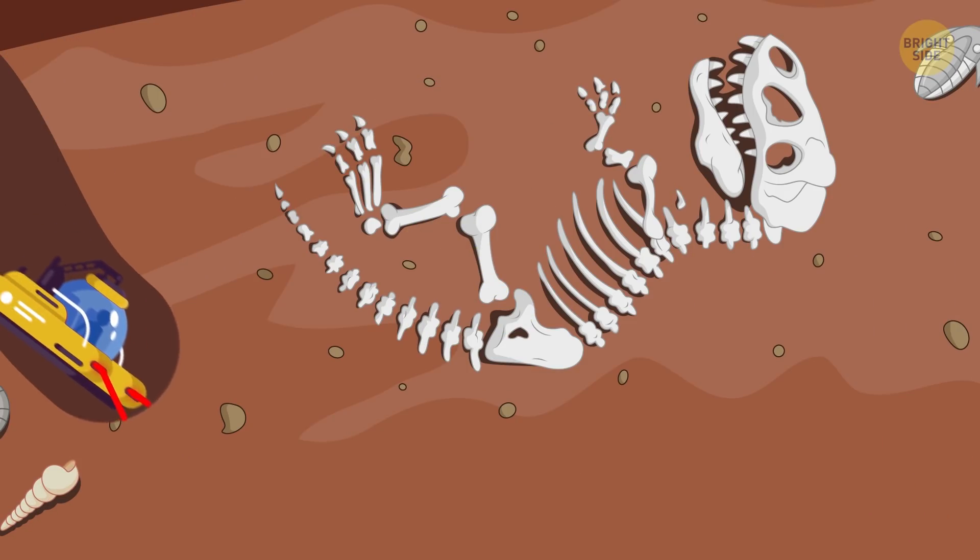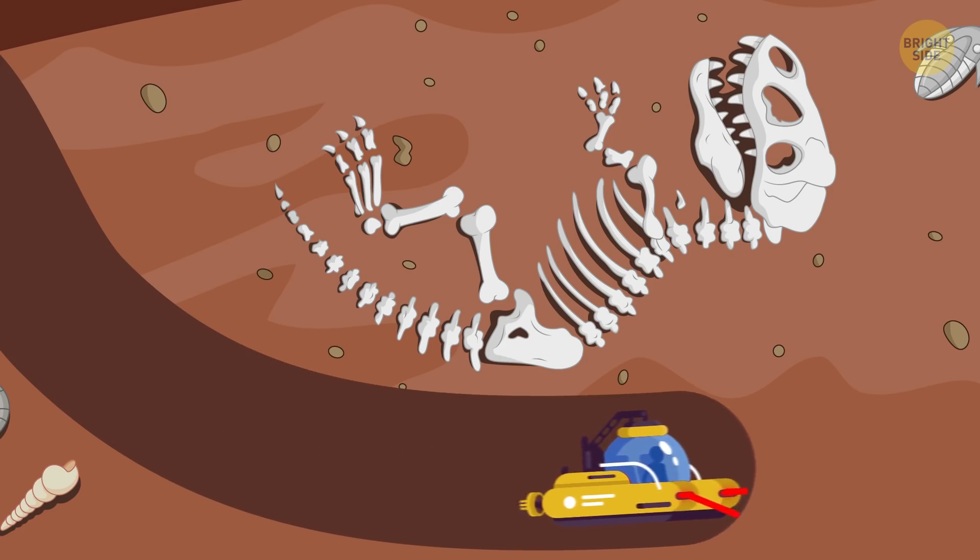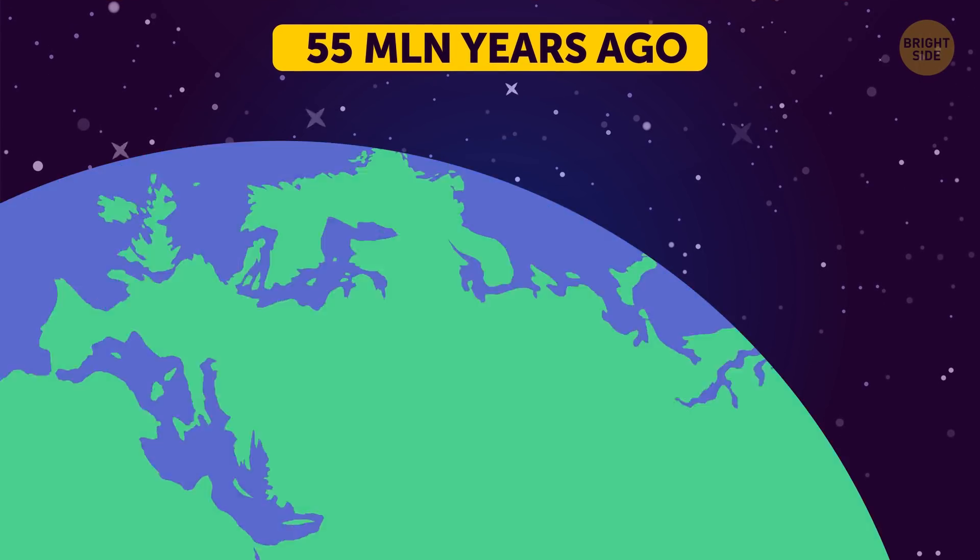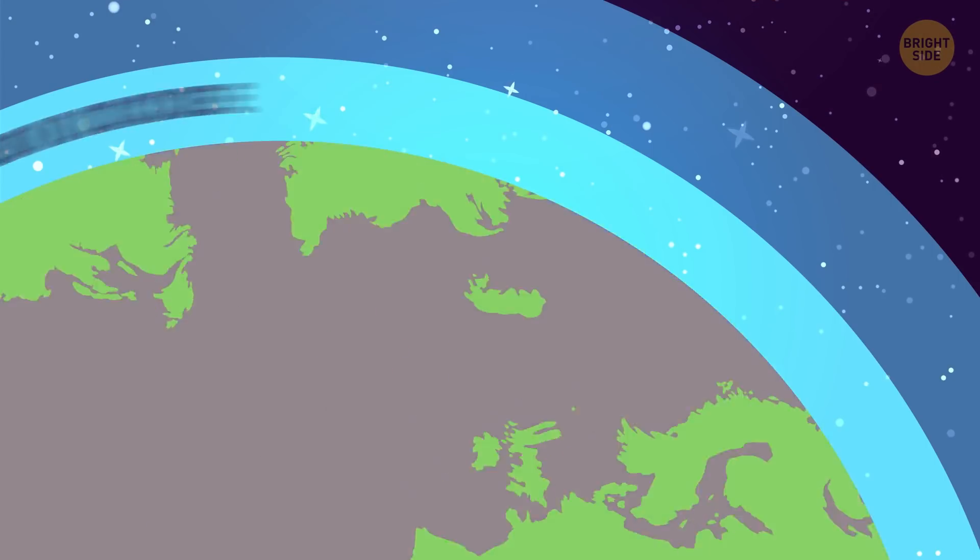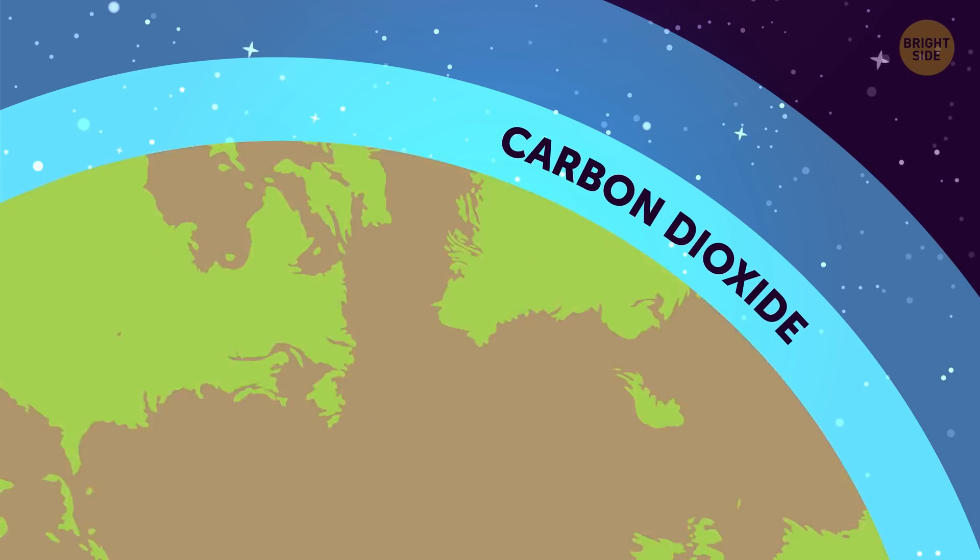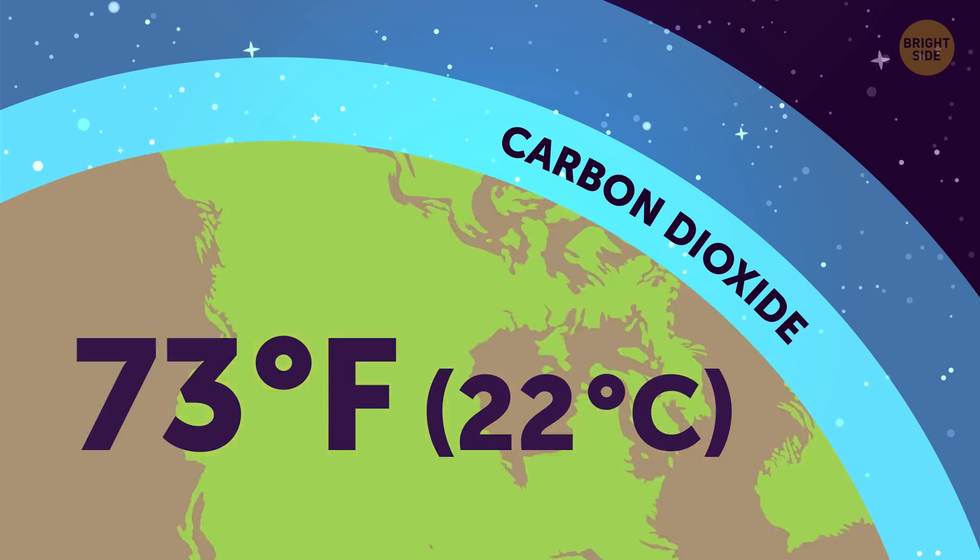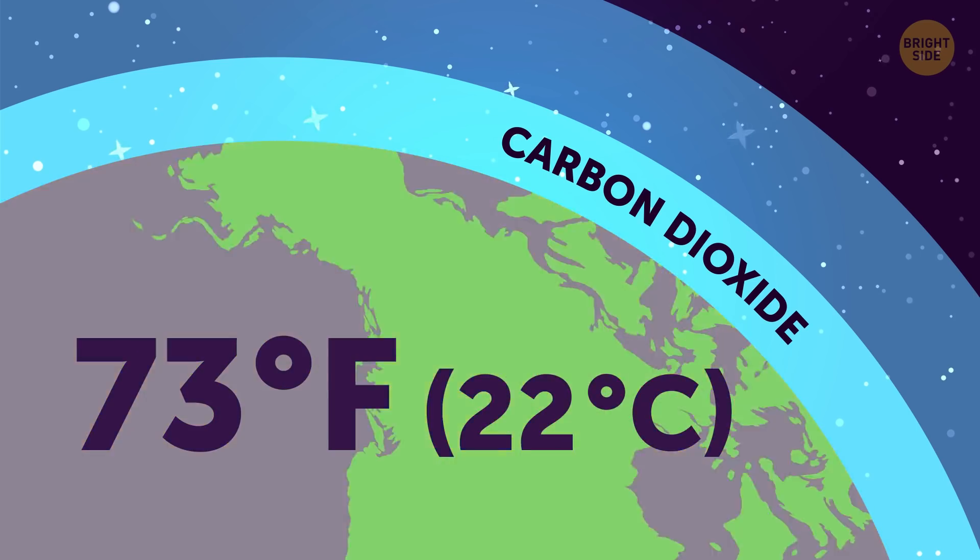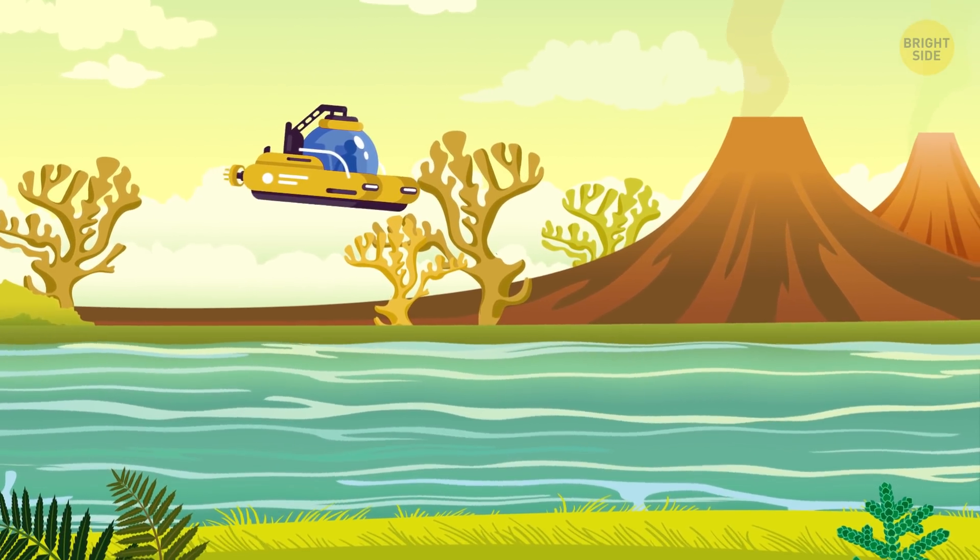The biggest change, though, has to be the end of the dinosaurs. Poor guys. 55 million years ago, something similar to today's global warming trend takes place. Carbon dioxide builds up in the atmosphere, and the global temperature reaches a toasty 73 degrees Fahrenheit. I must say, the Earth is such a beautiful place with no trash and plastic and neon signs.